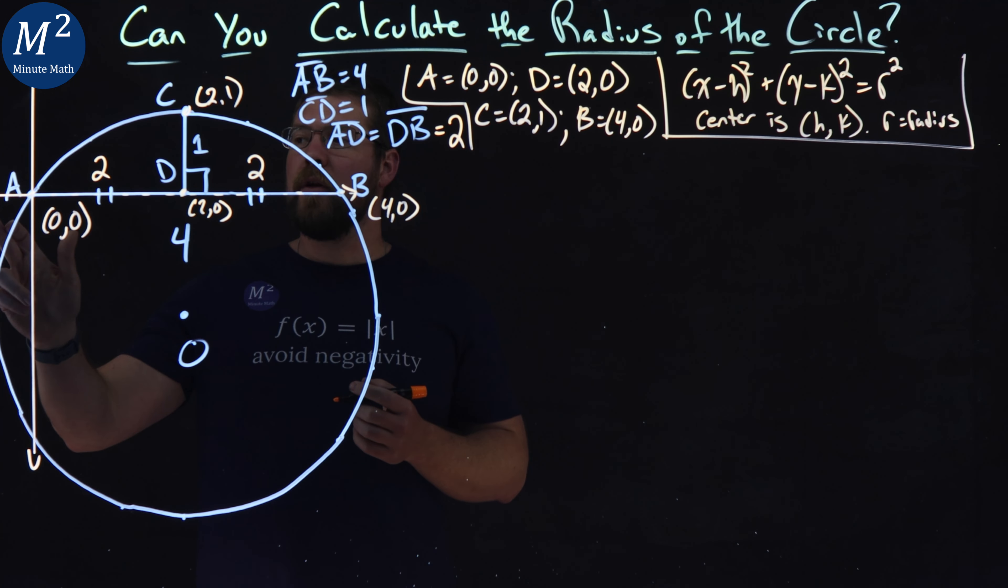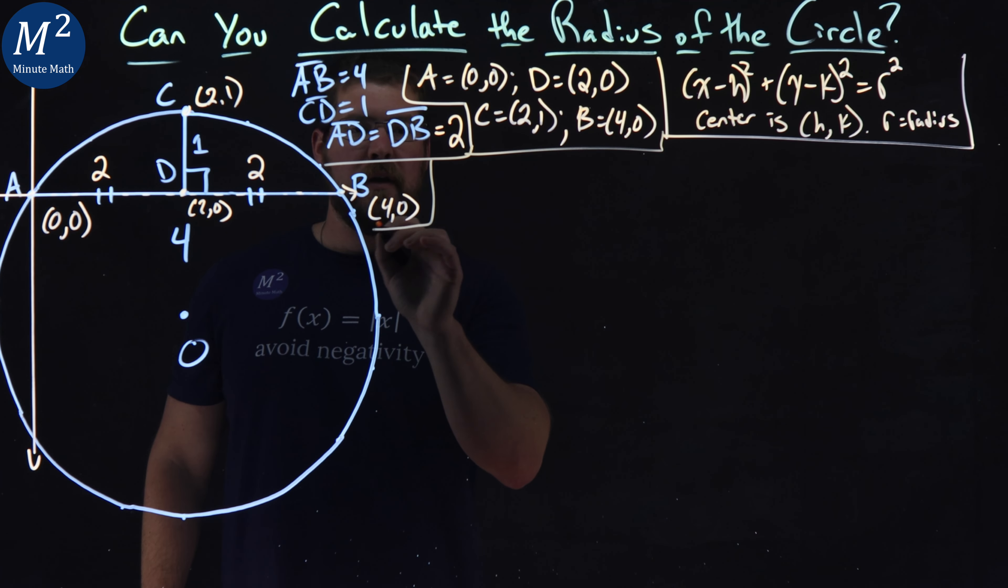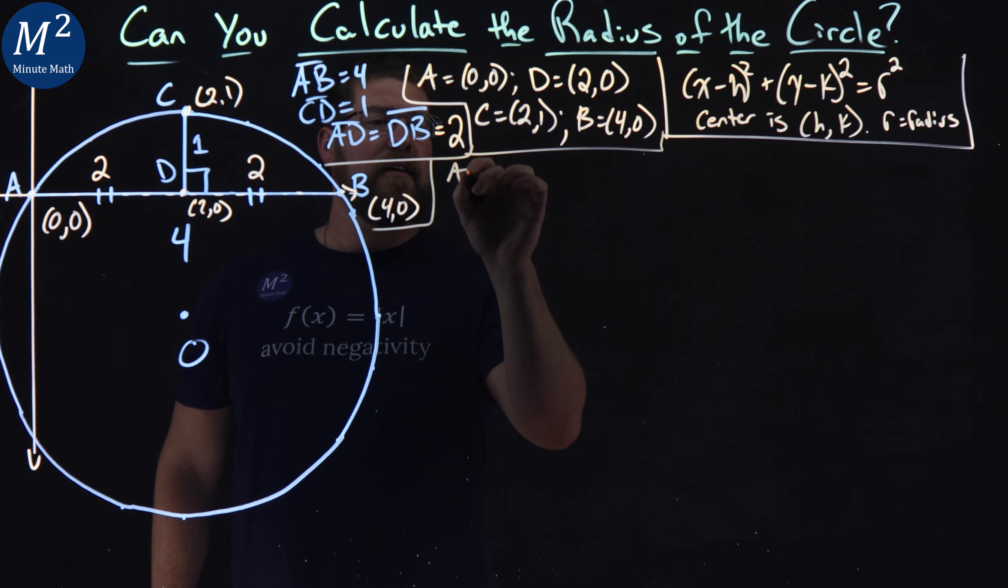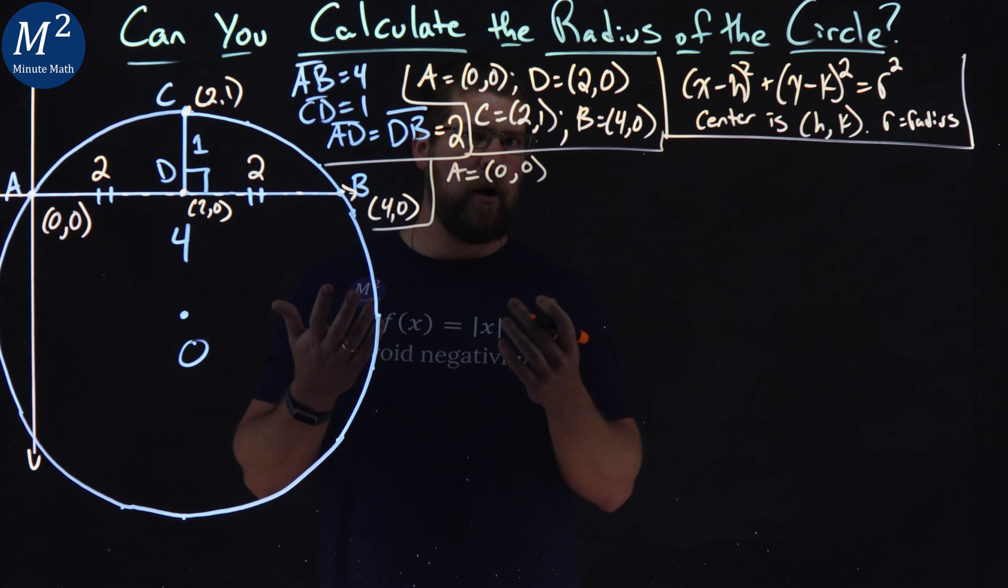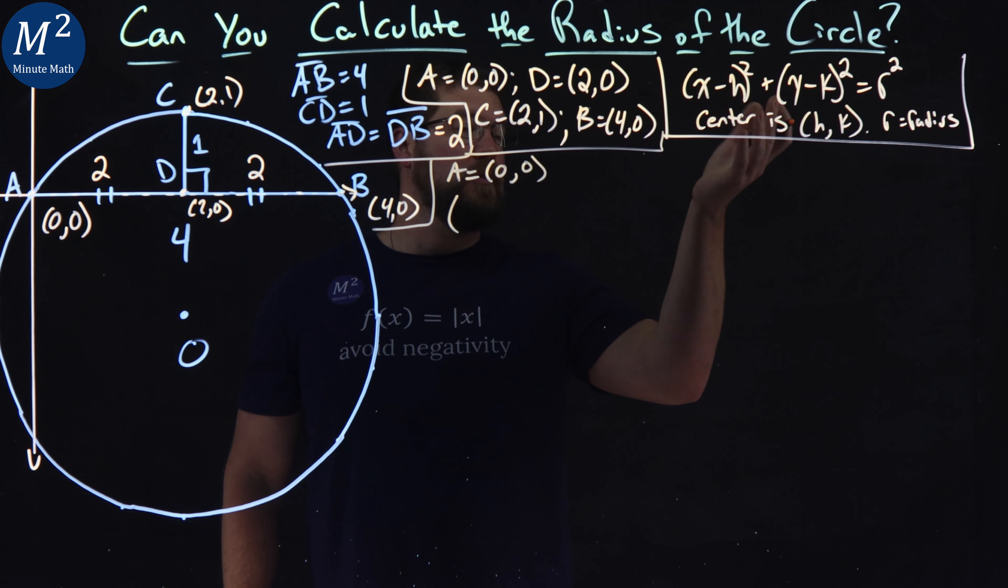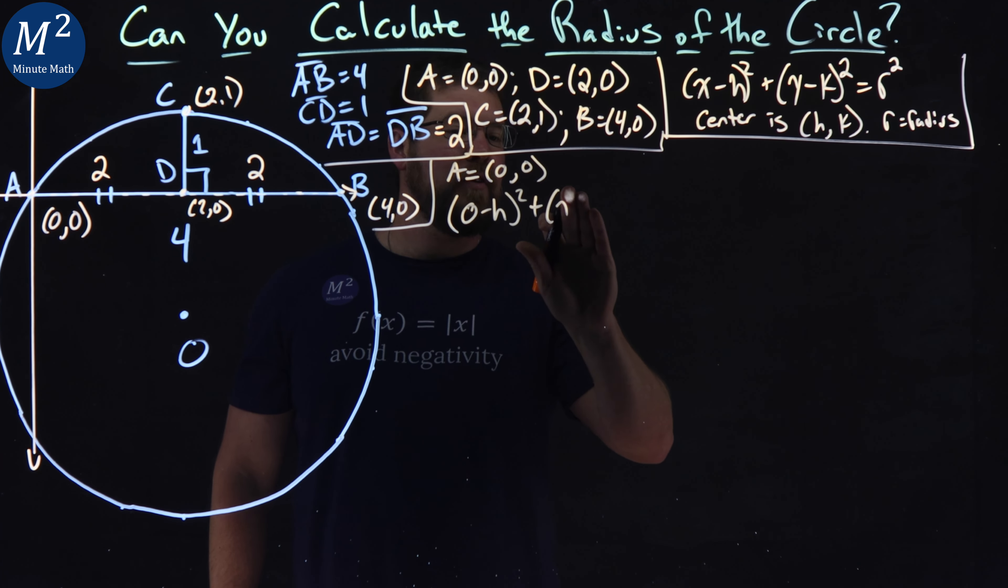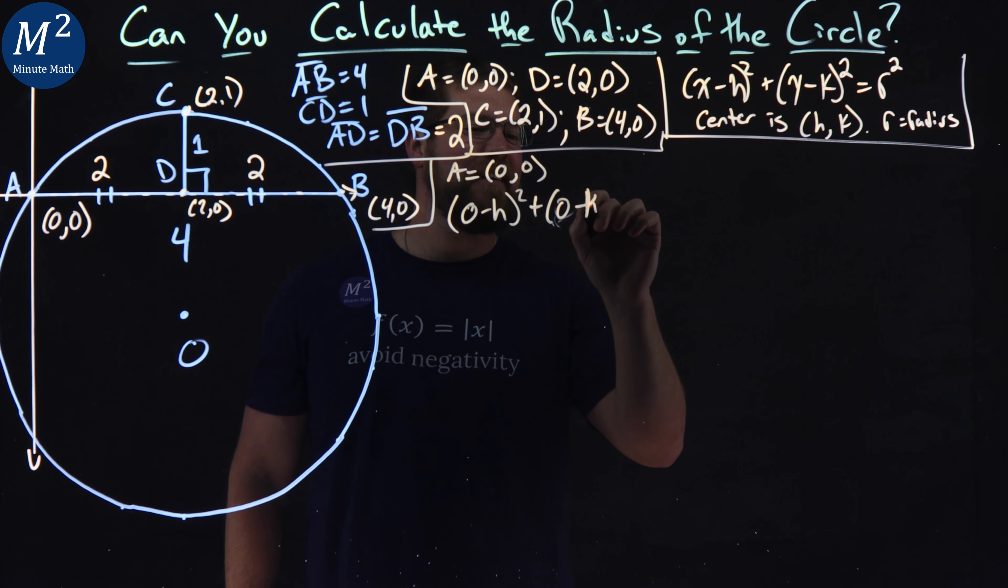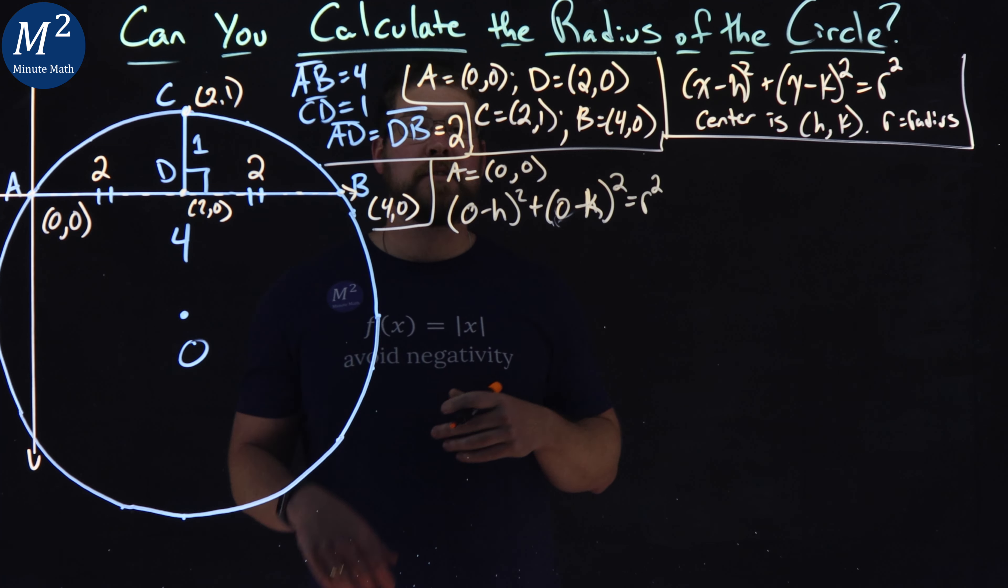So the first thing I'm going to do is I'm going to deal with A, our point zero, zero. So let's separate that out. I'm going to deal with A here. And A is a zero, zero. It's a point on the circle. And what is that going to do and help us here? Well, our equation for the circle, we replace X and Y with zero and zero. So zero minus H all squared plus zero minus K all squared is equal to R squared.